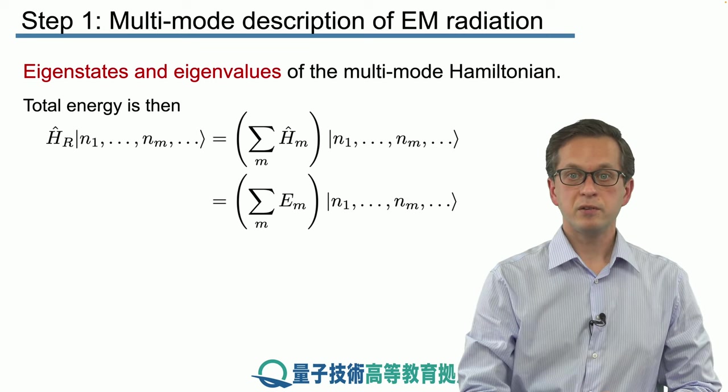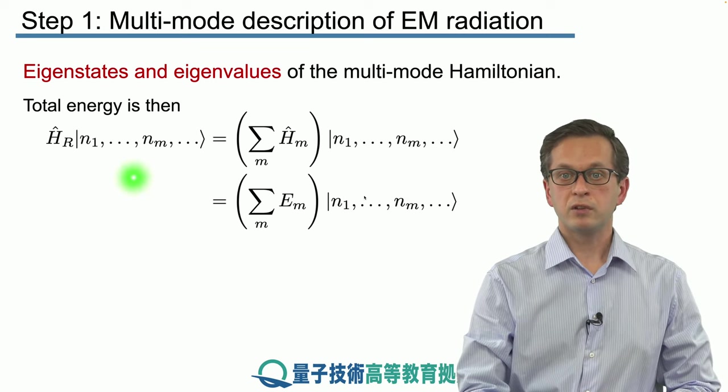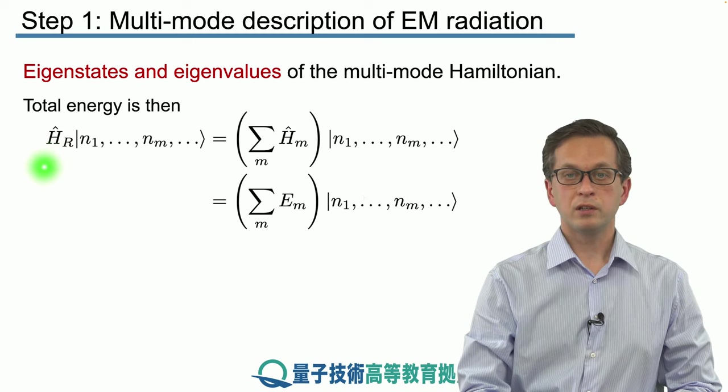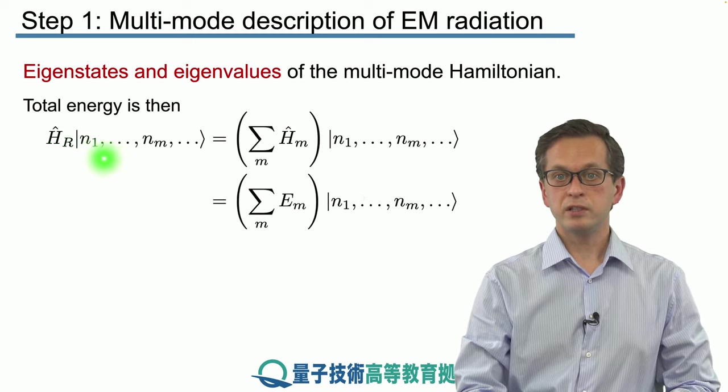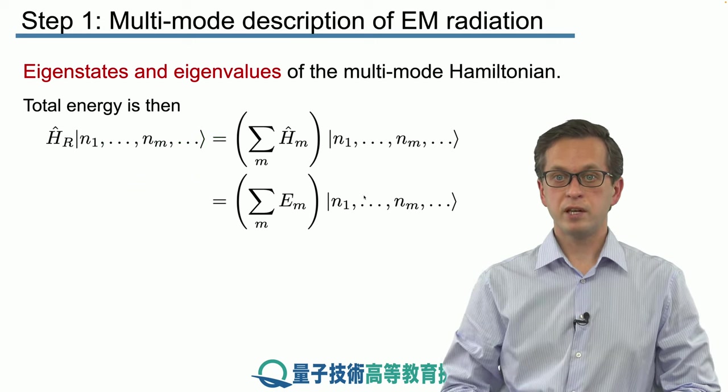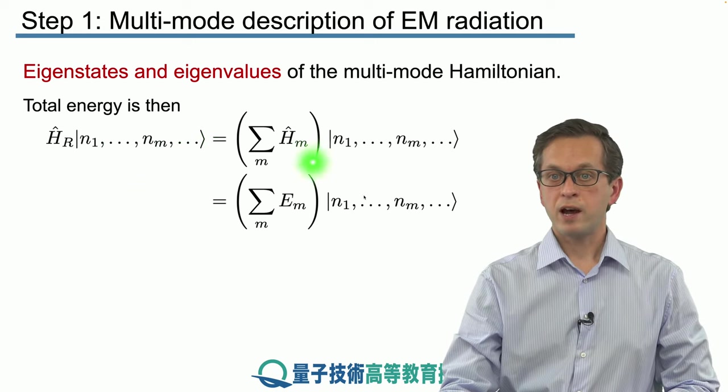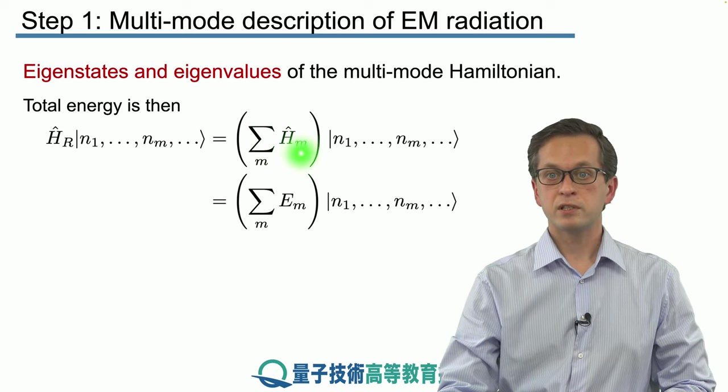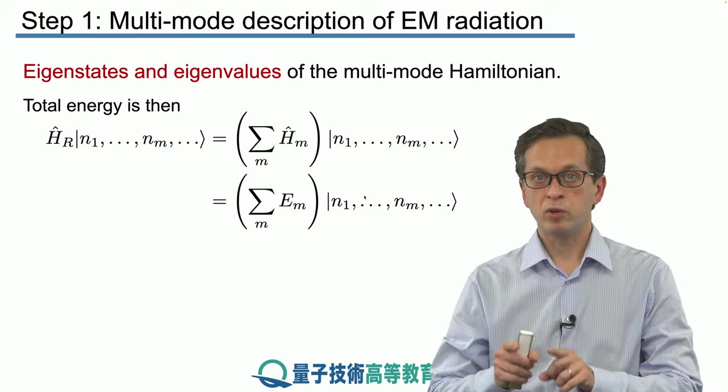Let's test it. Let's substitute our expression into the eigen equation for the multimode case. We've got our total Hamiltonian for the radiation field acting on our multimode number state. We can write the total Hamiltonian as the sum of individual Hamiltonians, where all of these hm's act only on mode m.